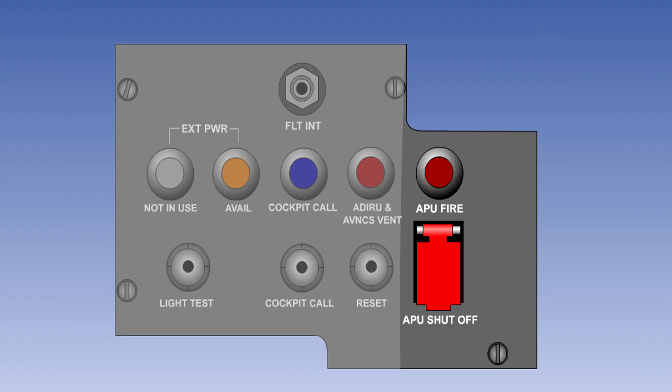There may be an external auxiliary power unit control panel, which will include a fire warning horn and a means of shutting down the APU. This panel is for use by personnel working on the outside of the aircraft.